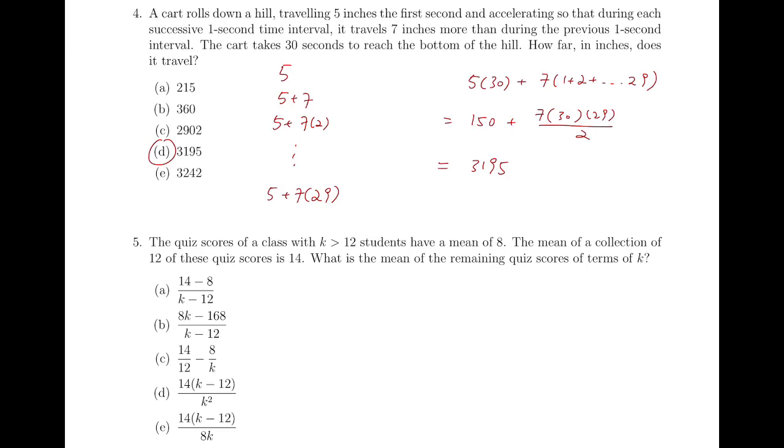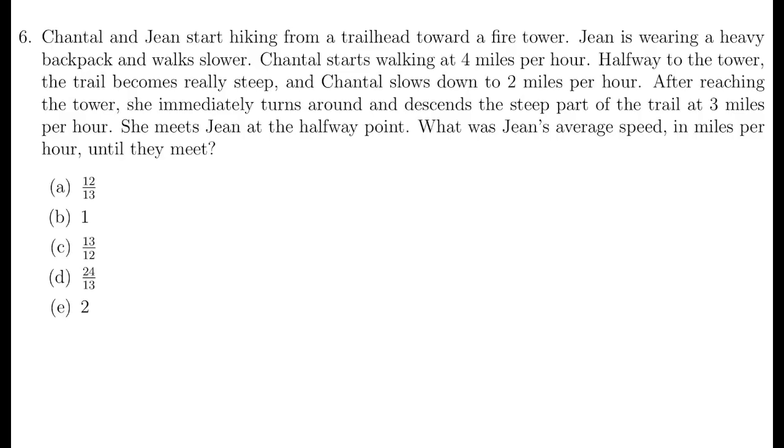Question 5. Now there are K students with mean to be 8, so the total score for the K students is 8K. 12 of the students have mean to be 14, and those 12 students have a total score of 168. So the mean is this expression divided by K minus 12, so the answer is B.